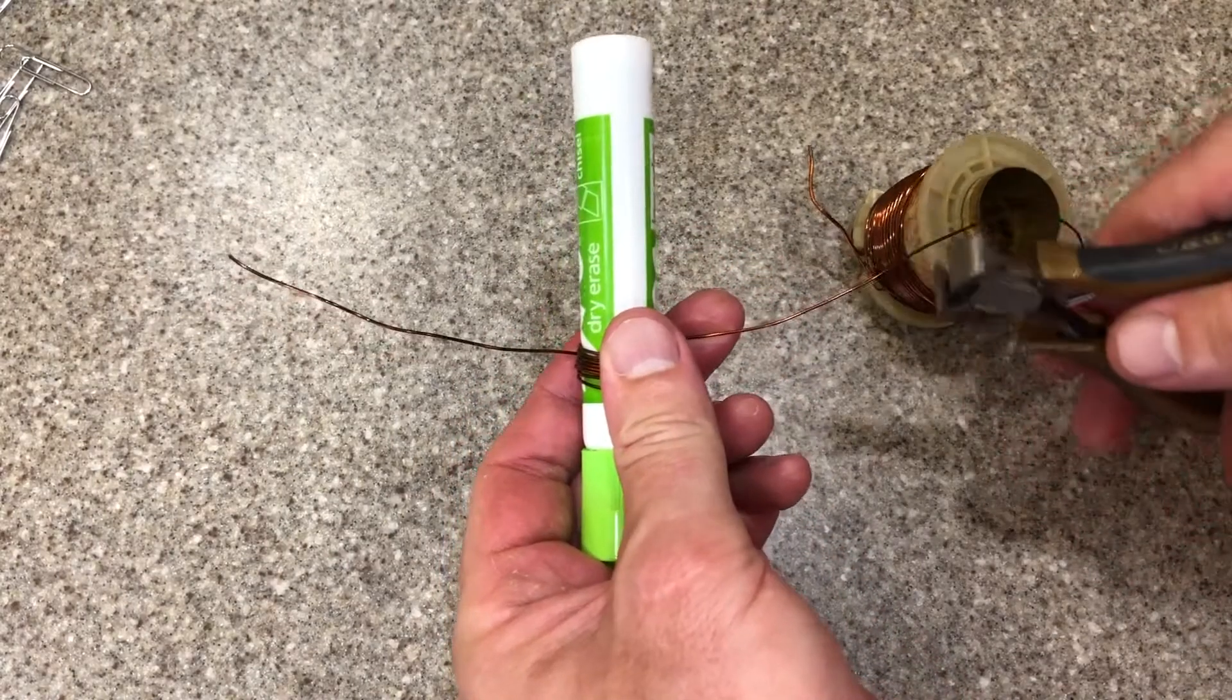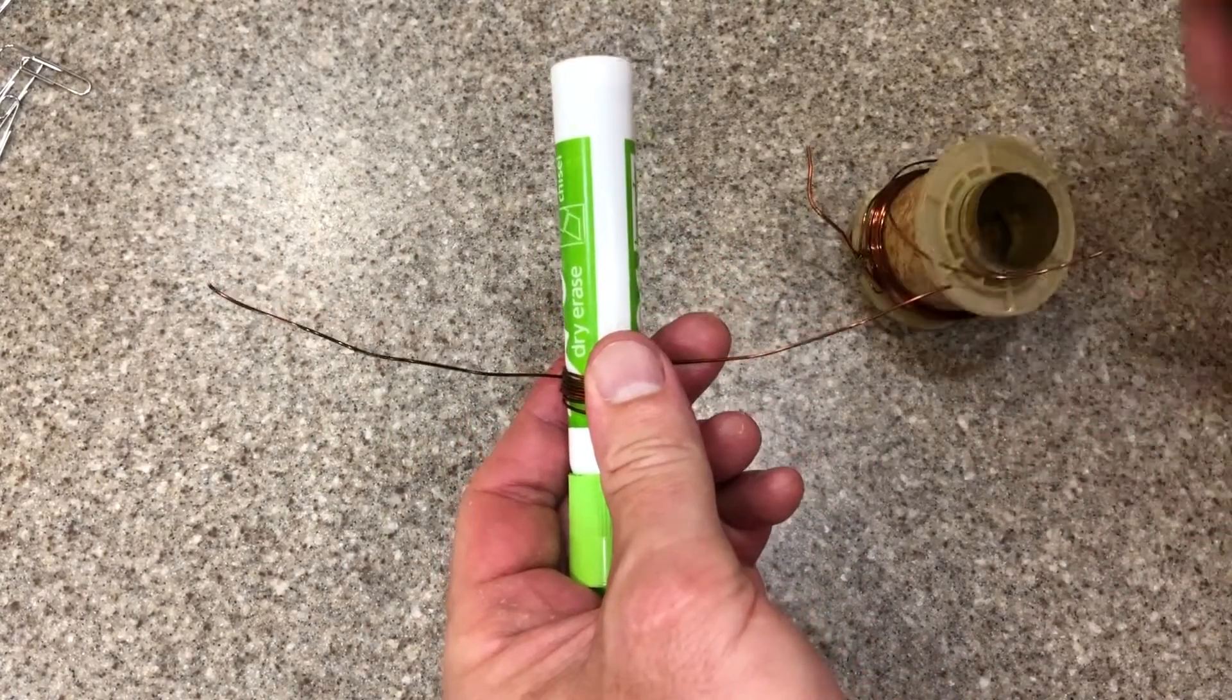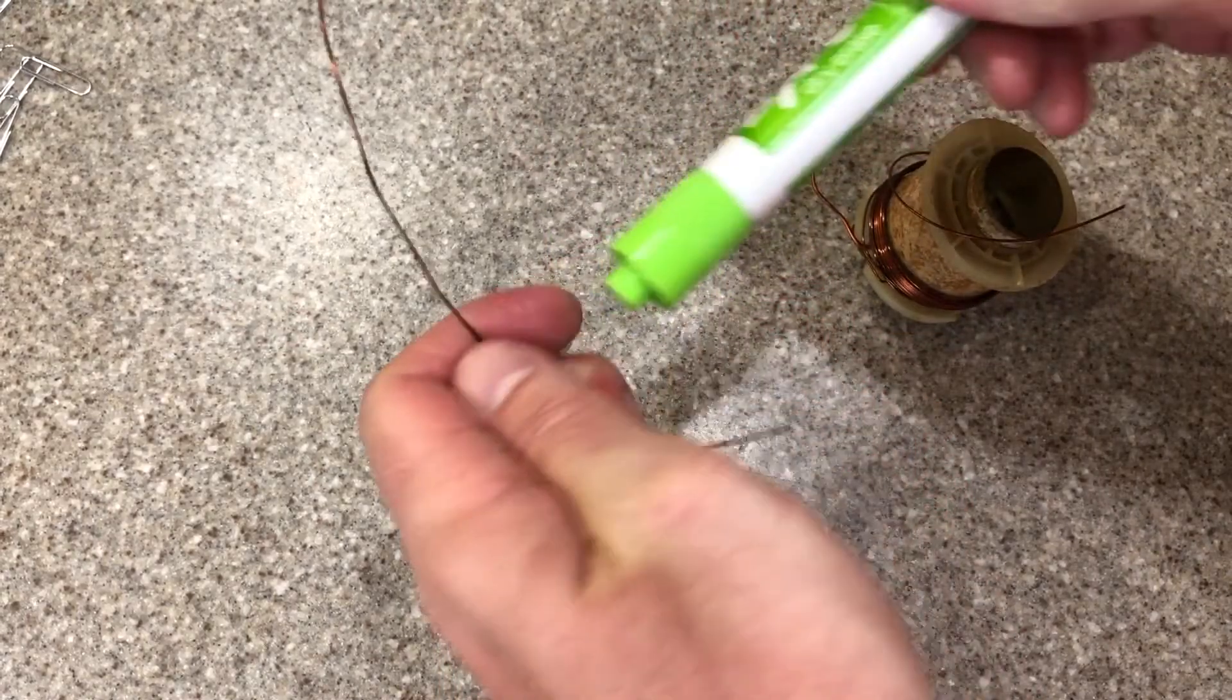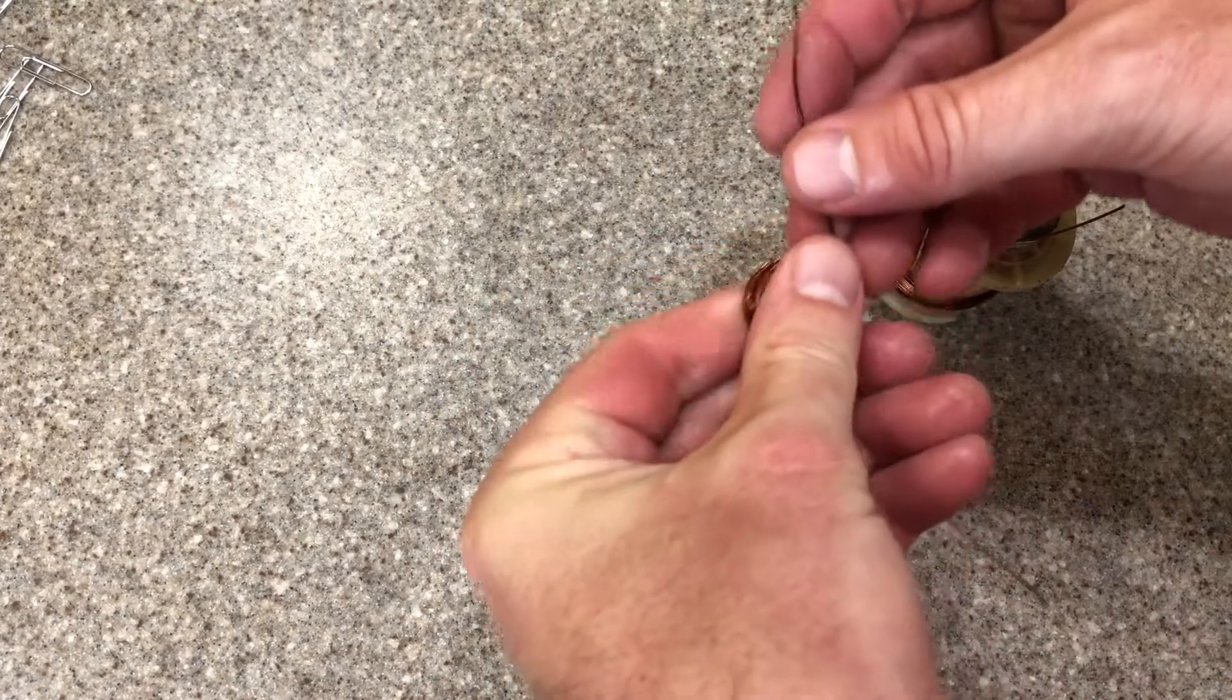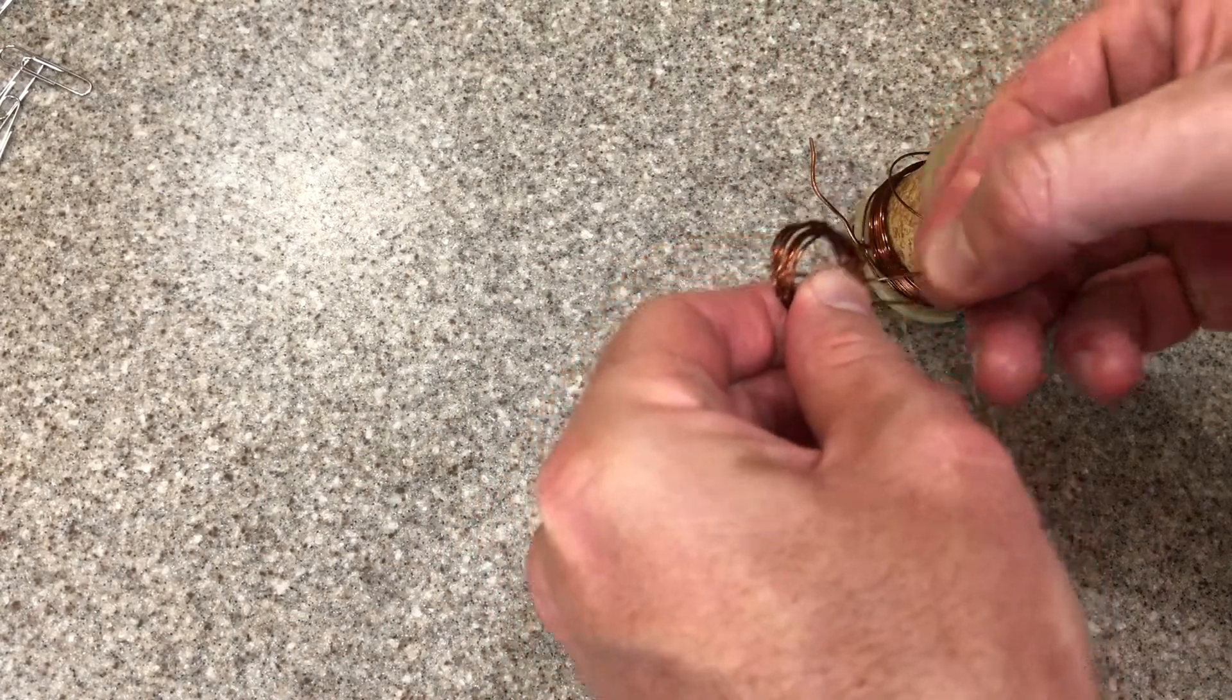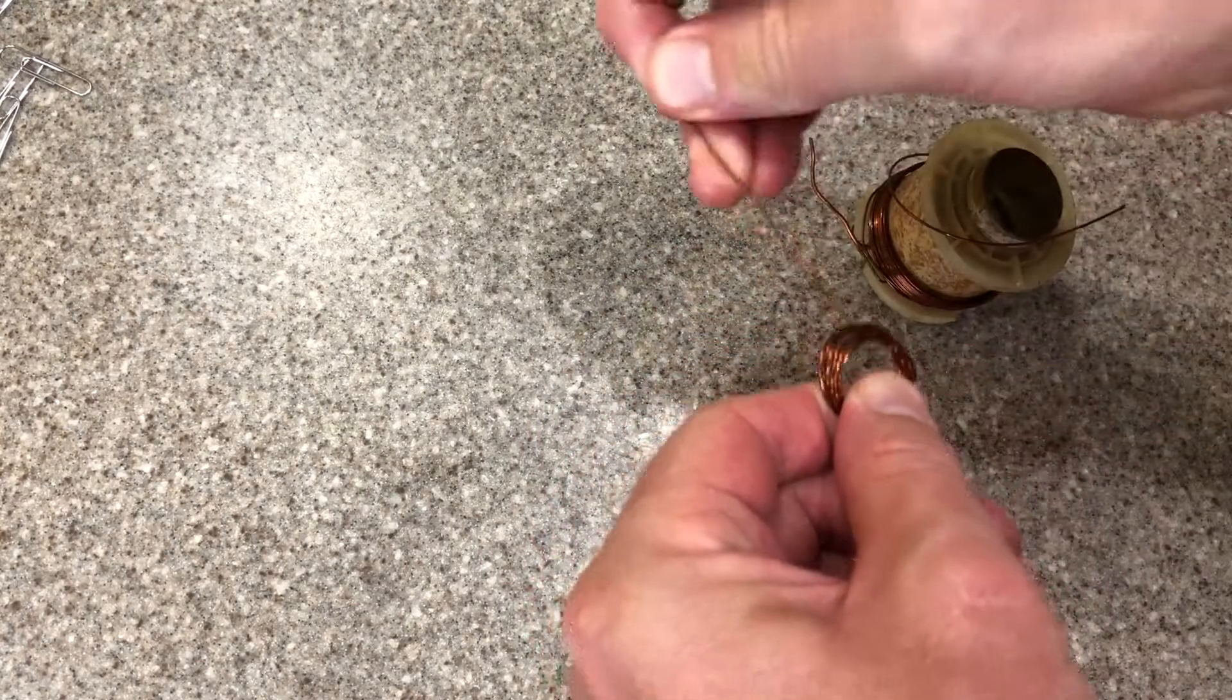And we're going to snip it off. Scissors will do. I also have some wire cutters. Take the coil of wire off. And you want to fold in the ends here so that it doesn't come apart on you.